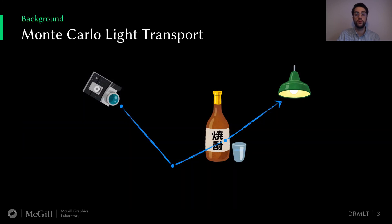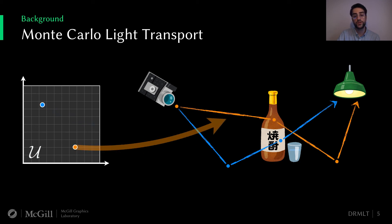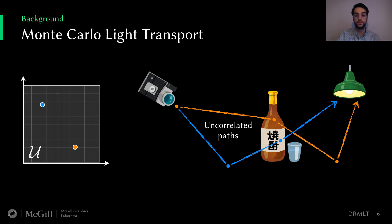Of course you can use your good old Monte Carlo path tracer to render them, but you might run into some problems. To see why, it is convenient to see path tracing as a black box mapping from random numbers to light paths. Random numbers are generated in the so-called primary sample space U. They are then warped and consumed by the sampling events that occur during path construction. This approach is conceptually simple but fails to capture important regions of the space as samples are generated independently from one another, leading to uncorrelated light paths with effectively no knowledge of their relevance to the path integral we're trying to approximate.